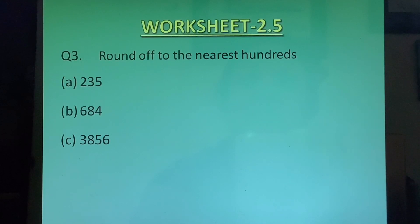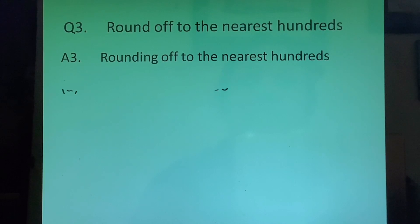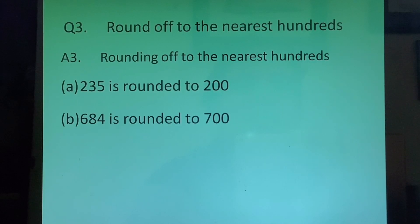Question 3 A part, rounding off to the nearest hundreds 235. Now 235 we will round off to the nearest hundreds and we will get 200. 3 at the tens place is less than 5 so 2 will remain 2 and all the other digits will change to 0. Therefore we will have 200 as the answer. Then 684, 8 is greater than 5. Therefore 684 will become 700.